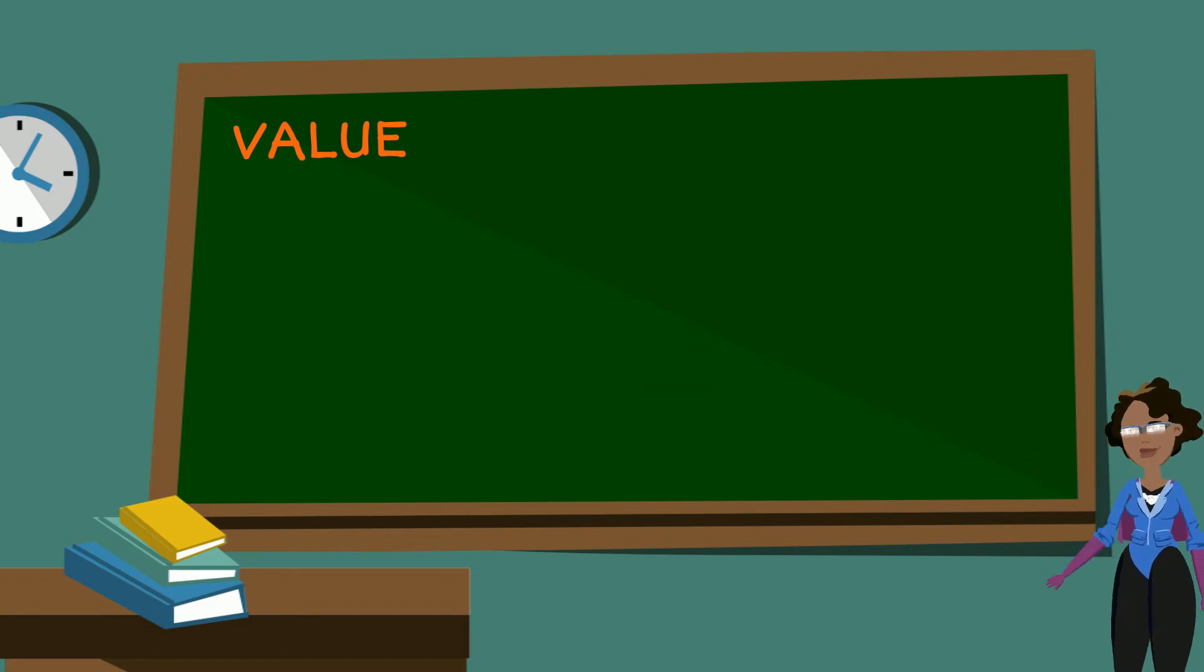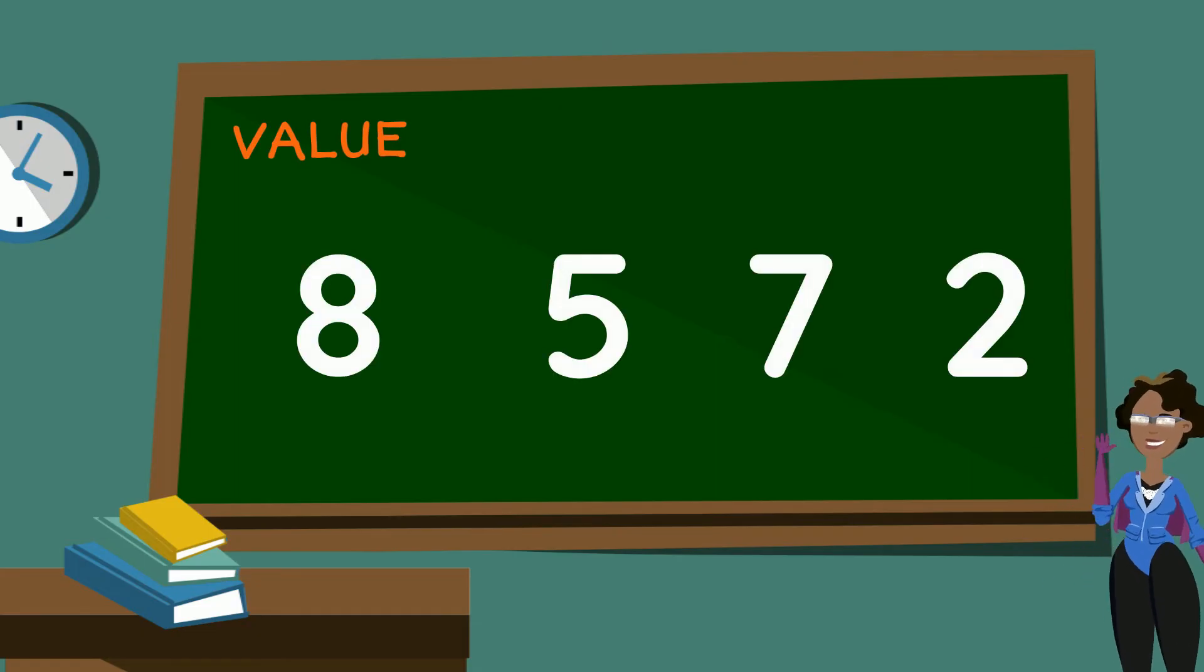And now on to the value of the digits in our last number, 8572. The value of the 8 is 8000, the value of the 5 is 500, the value of the 7 is 70, and the value of the 2 is 2.